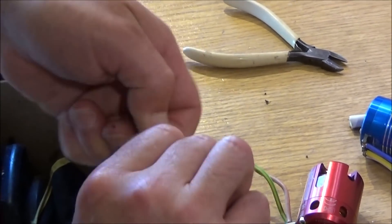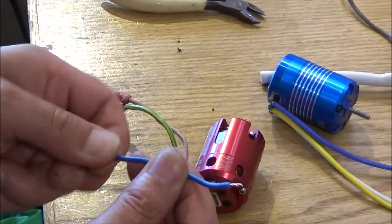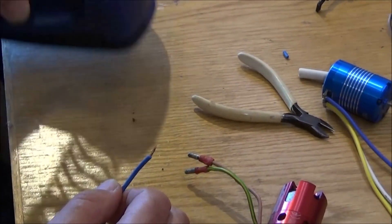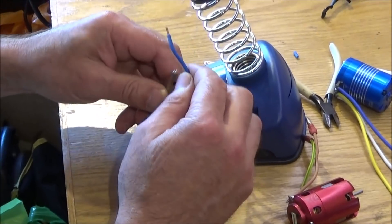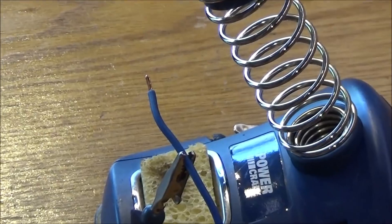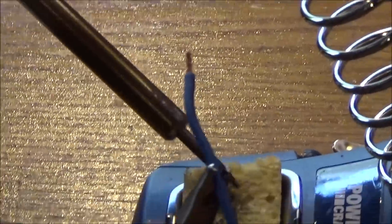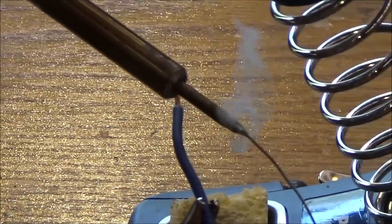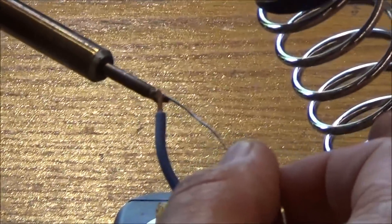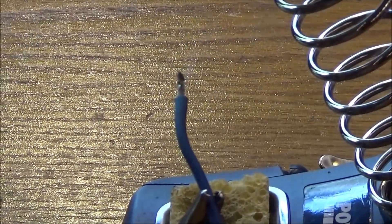I need to obviously expose the wires in there so that we can solder them. Once you've stripped it off, just twist those wires together slightly so they hold together and then do the same with the other end. Just give it a nip with your cutters and then pull it off. Give that a twist.